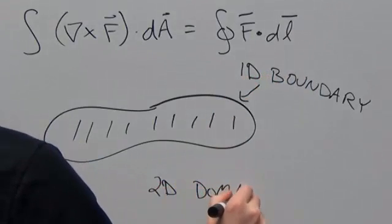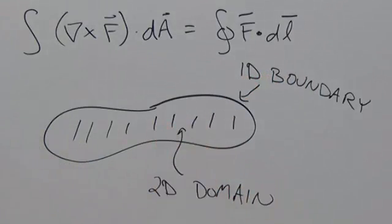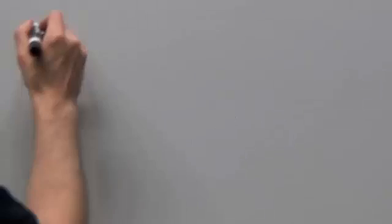So the left-hand side of Stokes' theorem involves integrating a curl over some area. By analogy, the right-hand side must involve integrating up the function itself over the 1D boundary of that domain, a line integral. And there we have it. So to recap,